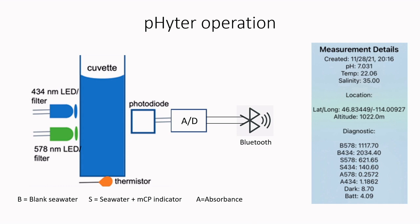The Phyta instrument has two LED lights to assess the absorbance in the blue and yellow regions of the spectrum. The reading is first taken with seawater in the cuvette as a blank. The metacresol purple indicator is added and a second reading taken. This information is transferred to a smartphone via Bluetooth connection from where the pH is calculated.